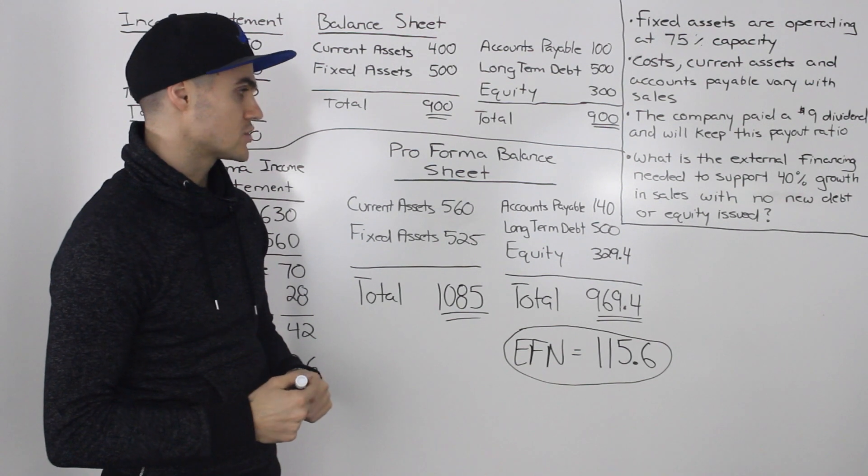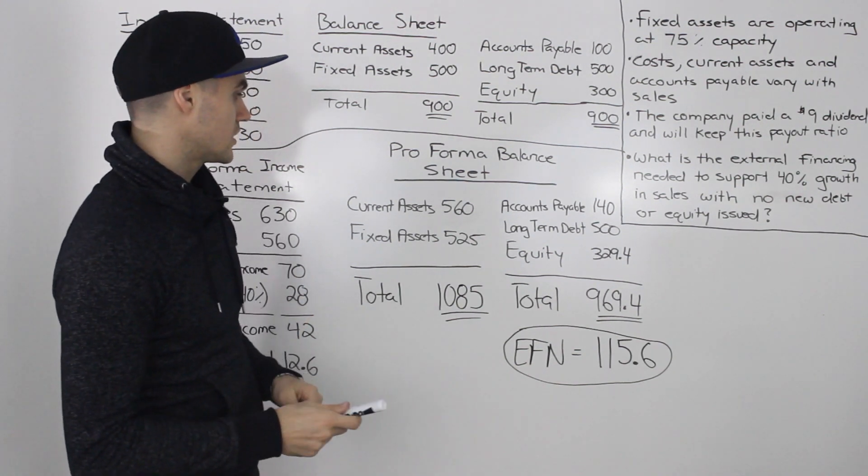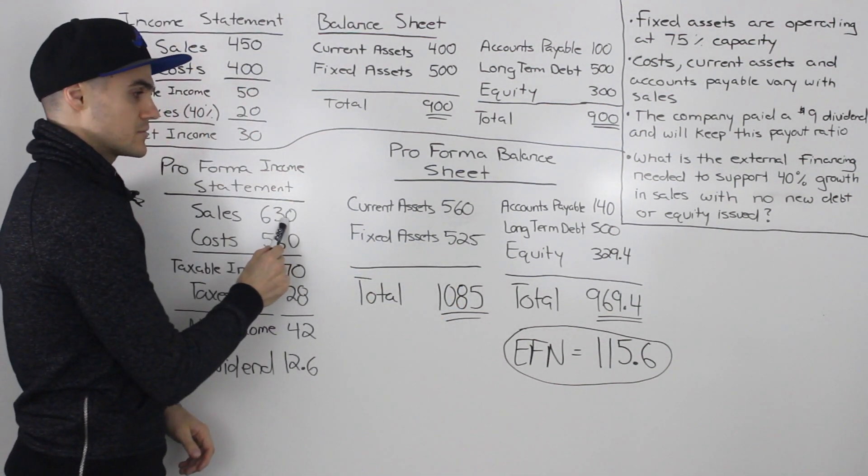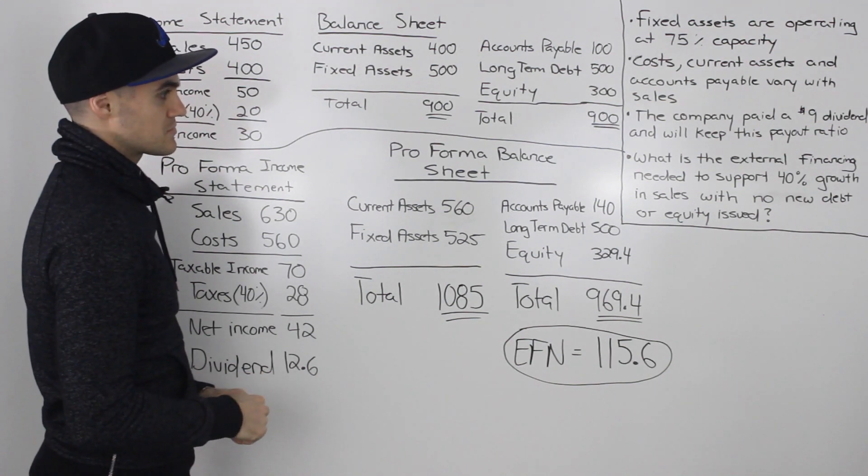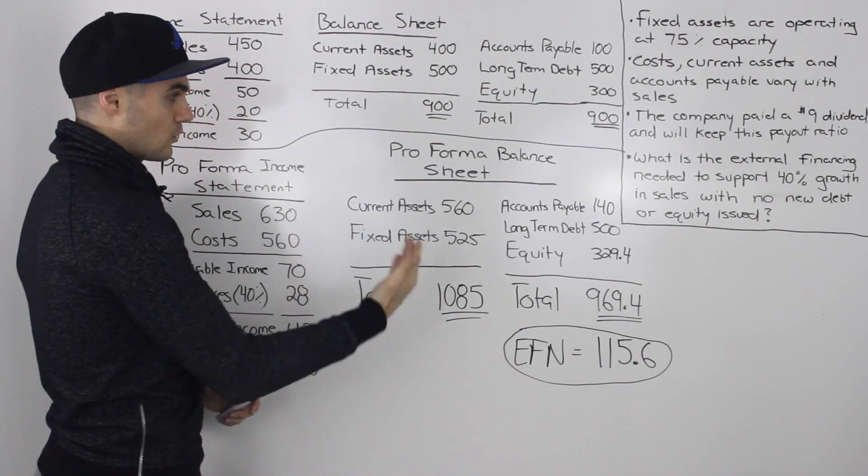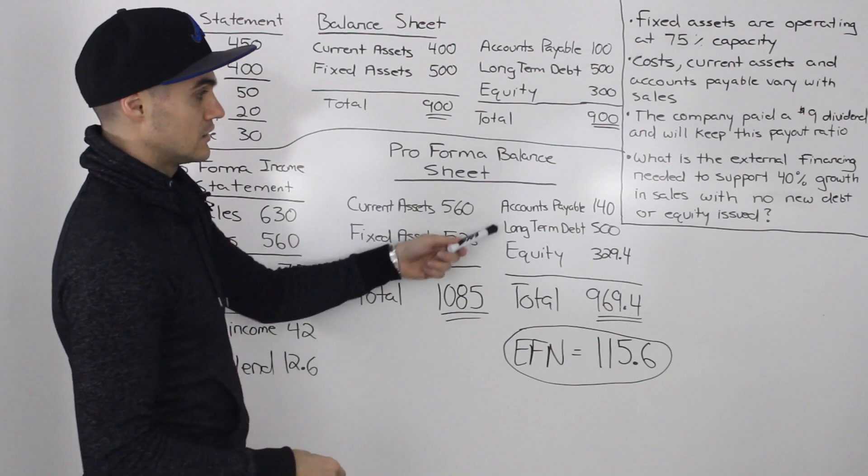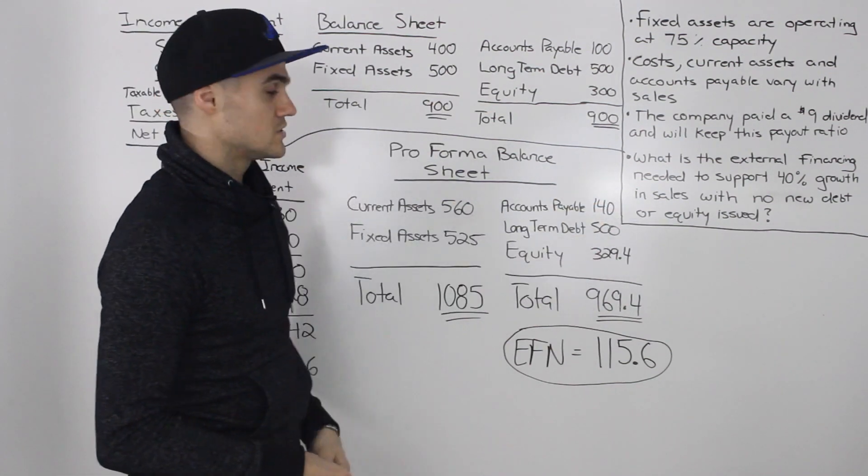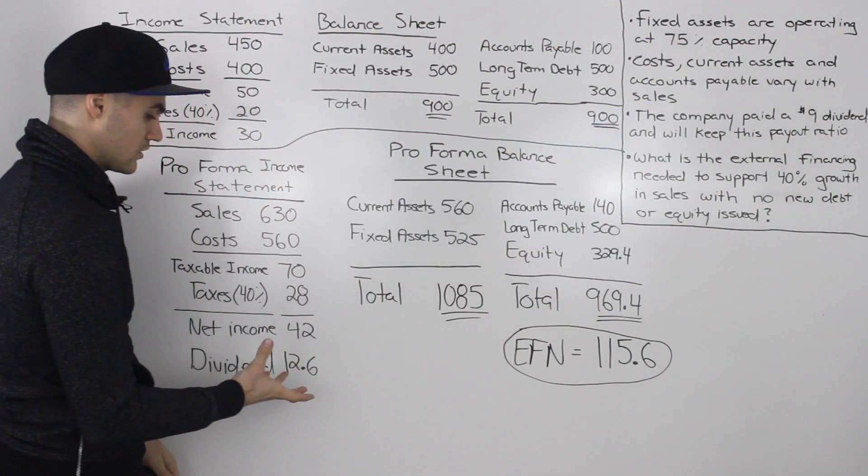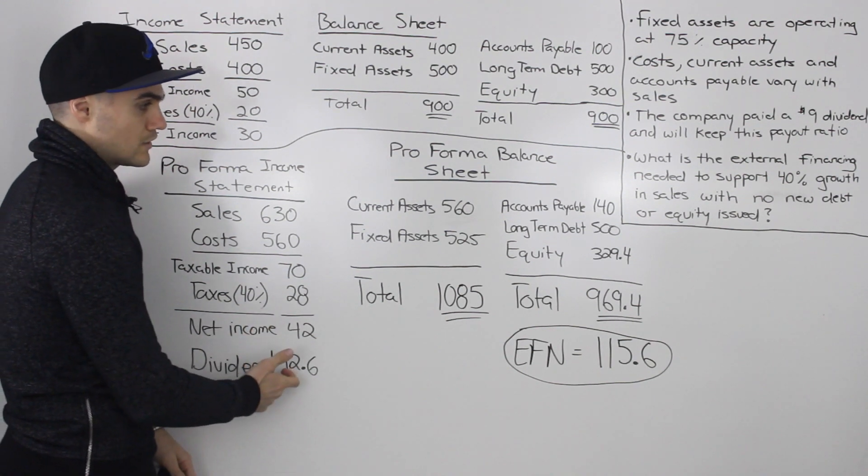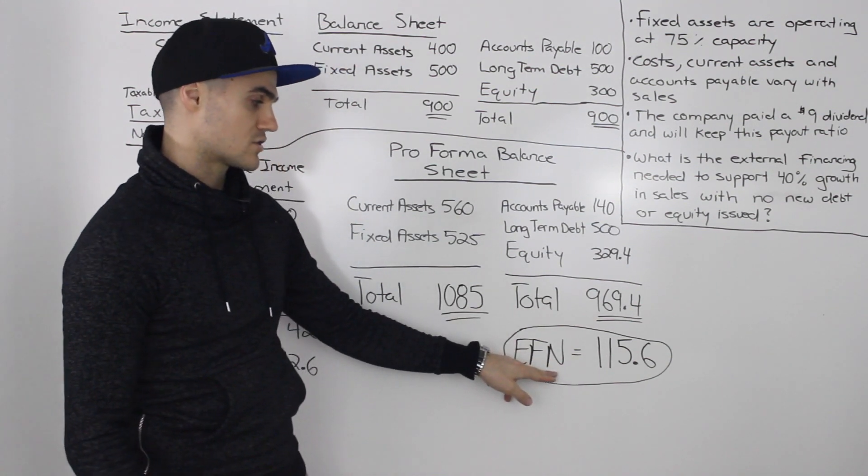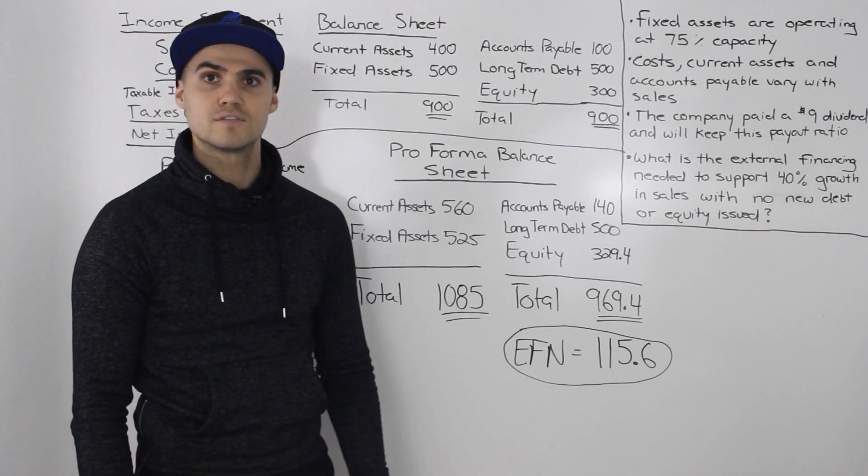So overall, not too bad of a question, very similar to the examples we've been doing. The trickiest part was figuring out what that new fixed assets amount would be to support that growth in sales up to 630. But everything else is pretty much the same. The current assets, the accounts payable, they vary with sales. So you would grow those by 40% as well. The long term debt would stay the same at 500 because there's no new debt being issued. There's no new equity being issued. So that increase in equity came from the retained earnings, which we calculated as net income minus dividends. You get your balance sheet and then you realize that they don't balance and then you get that external financing needed figure of 115.6.